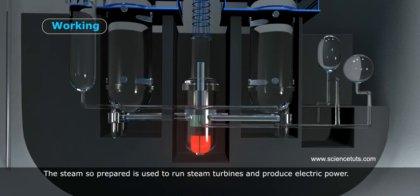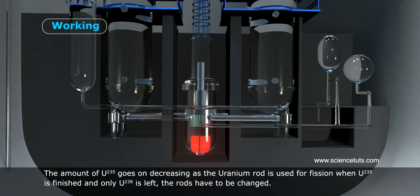The steam so prepared is used to run steam turbines and produce electric power. The amount of uranium-235 goes on decreasing as the uranium rod is used for fission.